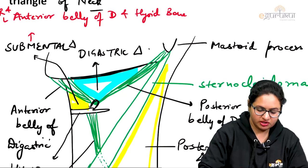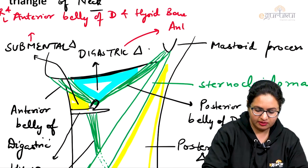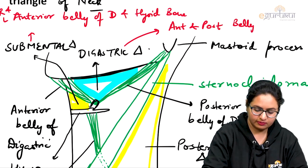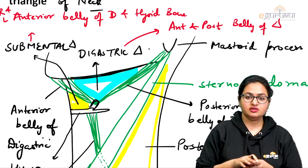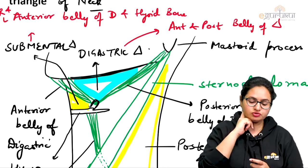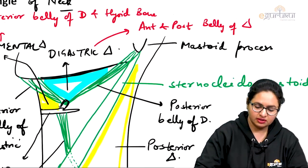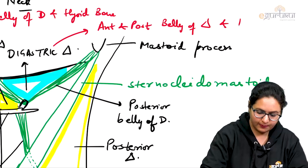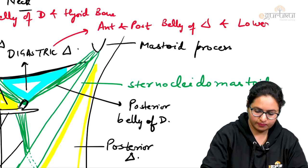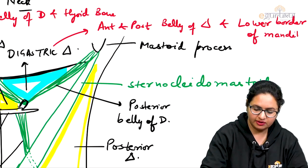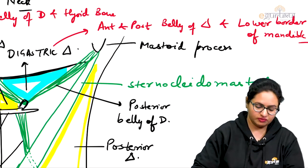For the digastric triangle, we have already mentioned the anterior and posterior belly of digastric. On the anterior side we have the anterior belly, towards the posterior side the posterior belly, and the base is formed by the lower border of the mandible. This lower border of the mandible contributes to the base of this triangle.